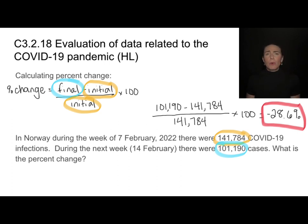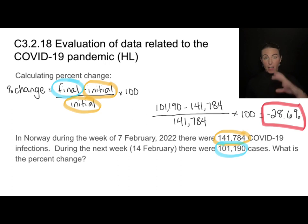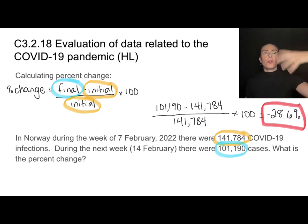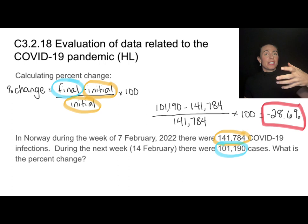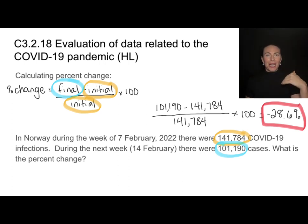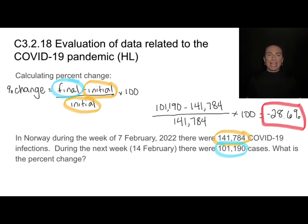It's also okay if we get a percent change that is greater than 100. If it's positive and greater than 100, that means things would have doubled or more than doubled. If it's negative and greater than 100 in magnitude, it would have gone down by more than half. You can use those as estimation guide rules to help figure out if you've done this correctly.